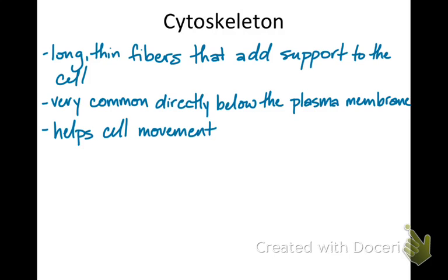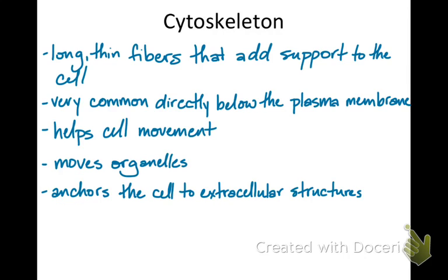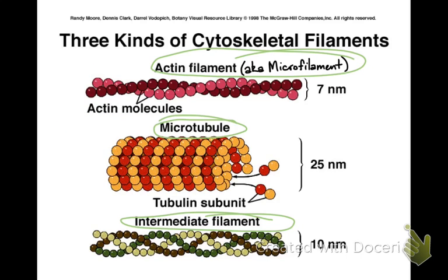It helps cells move, like when amoebas reach out along pseudopods to pull themselves into another area. It helps organelles move, like when vesicles travel along the microtubules using motor proteins, or arranging organelles as the cell divides. It also helps anchor the cell in place by attaching to fibers outside the cell. Now, we're going to discuss three major types of cytoskeletal fibers.